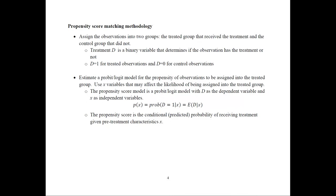We call the treatment D, a binary variable: D=1 for treated observations and D=0 for control observations. Step 2 is to estimate a binary outcome model — typically a probit or logit model — for the propensity of observations to be assigned into the treated group, using X variables that may affect the likelihood of being assigned to treatment.